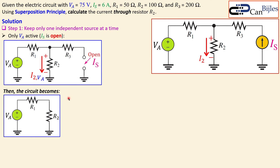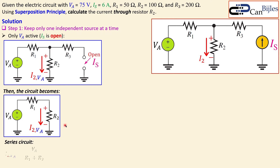We now have a series combination of three components: Va, R1, and R2 as resistors. We would like to calculate I2. We can calculate the total current given by Va and equate that to this current because they are equal in a series circuit — the current from the source equals the current through R1, which equals the current through R2. So I2 due to Va equals the voltage over the total resistance R1 plus R2: 75 over 150 (since 50 plus 100 equals 150), giving 0.5 amps.